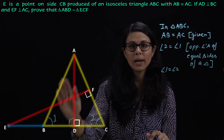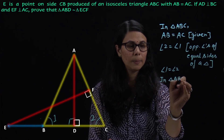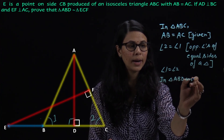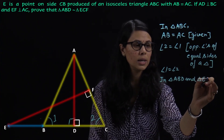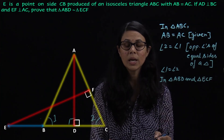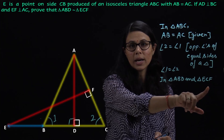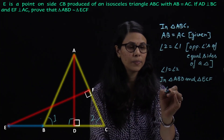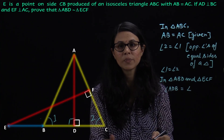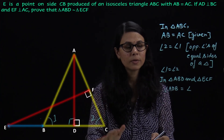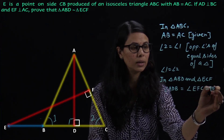In triangle ABD and triangle ECF, angle ADB is equal to angle EFC. Question mein diya hua hai ki AD perpendicular hai BC, aur EF perpendicular hai AC. Isliye angle ADB = 90° aur angle EFC = 90°, dono 90 degree hain.